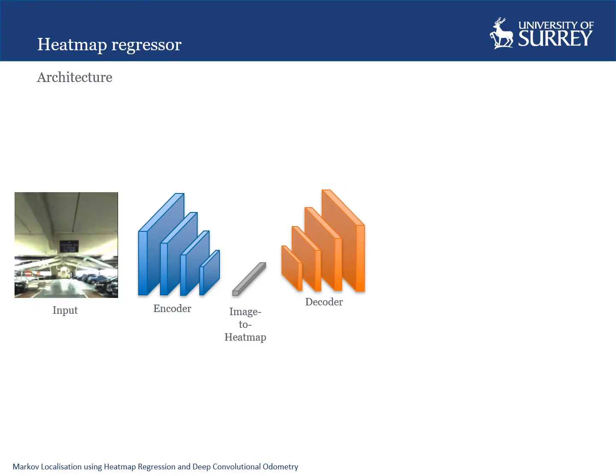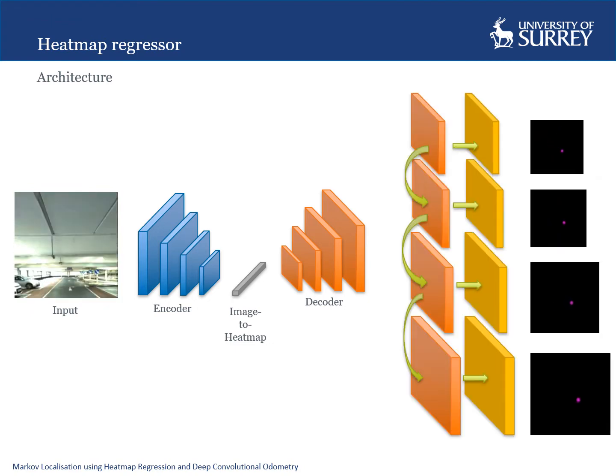In these heatmaps, each pixel corresponds to a location in the real-world ground plane. The network produces heatmaps at multiple resolutions, which are supervised with a combination of classification and regression losses.